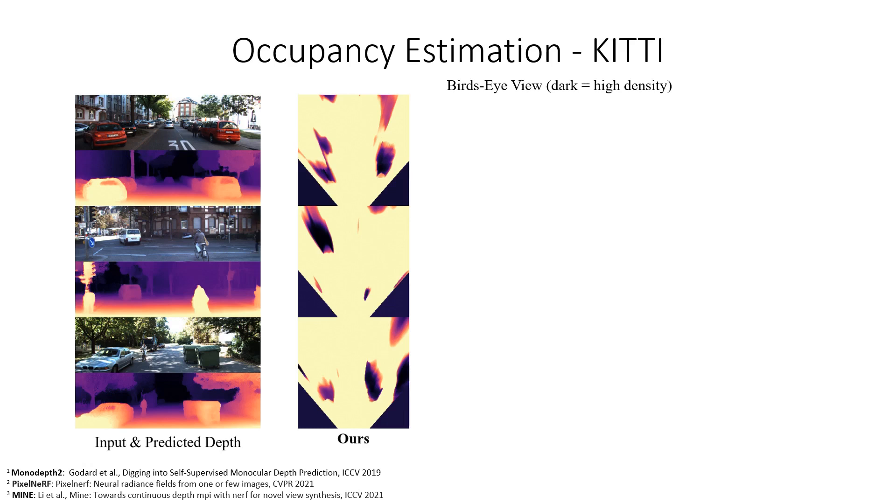Below the input image, you can see the expected ray termination depth rendered from the density fields. In the center, you can see the bird's eye views of the scenes where dark areas denote high density. We can clearly see that the reconstructed density fields correctly model the scenes and recover areas behind objects.